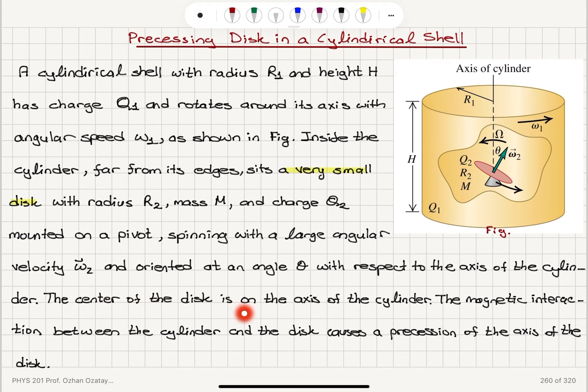The center of the disk is on the axis of the cylinder. The magnetic interaction between the cylinder and the disk causes a precession of the axis of the disk — that's what this omega is showing us.